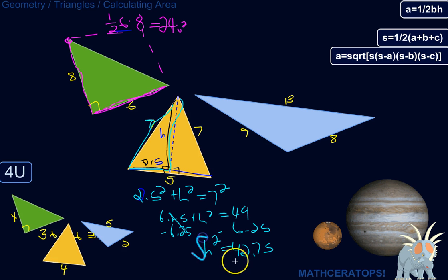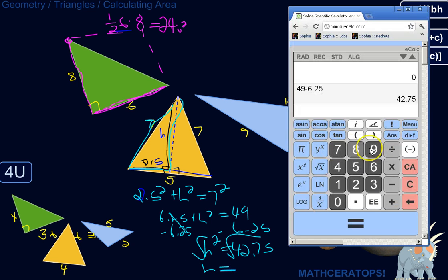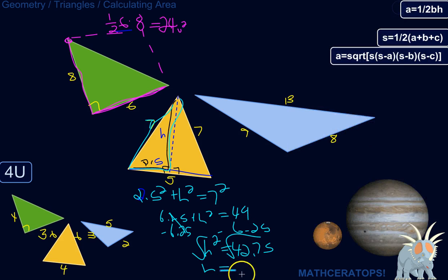So now to get the height, we just square root both sides. So the height is equal to the square root of 42.75, square root 42.75, which is about 6.5. So we have this side length of that little triangle is about 6.5. Well, that's the height of the overall big triangle. So now we can just do 1.5.